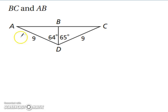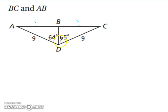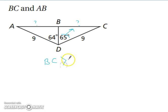Let's try another example: compare BC and AB. We have AD congruent to CD, and BD is congruent to BD by the reflexive property. Now we're looking at our angle measures — across from the larger angle is the larger side. The larger angle is 65 degrees, so therefore BC is our larger side.